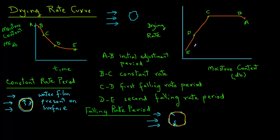So thus we have both constant rate period and falling rate period that can be expressed on the drying rate curve.